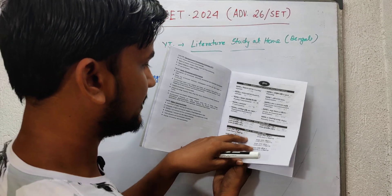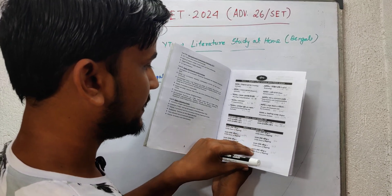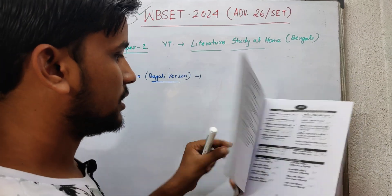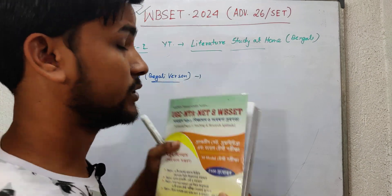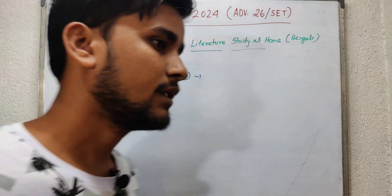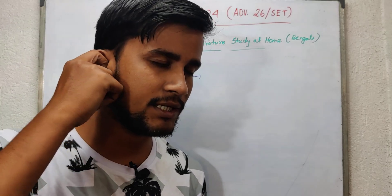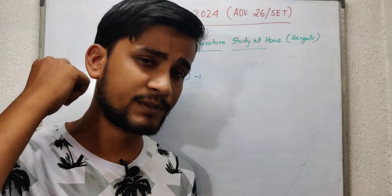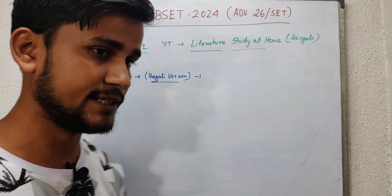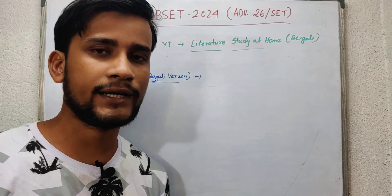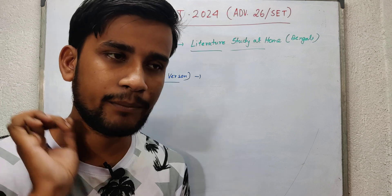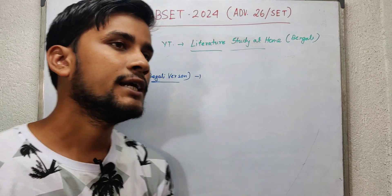You get five practice sets and 10 model test papers. There is also another book by Dr. Aniruddha Kai that contains chapter-wise concepts as well as answers. The first book is only for questions and answers. So you can take either one of these books if you want the Bengali version.